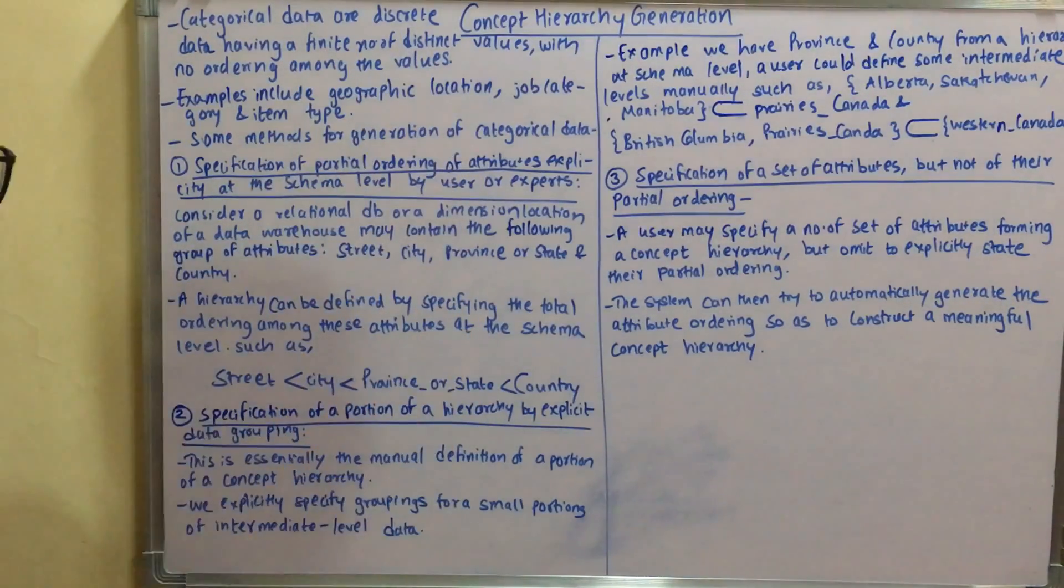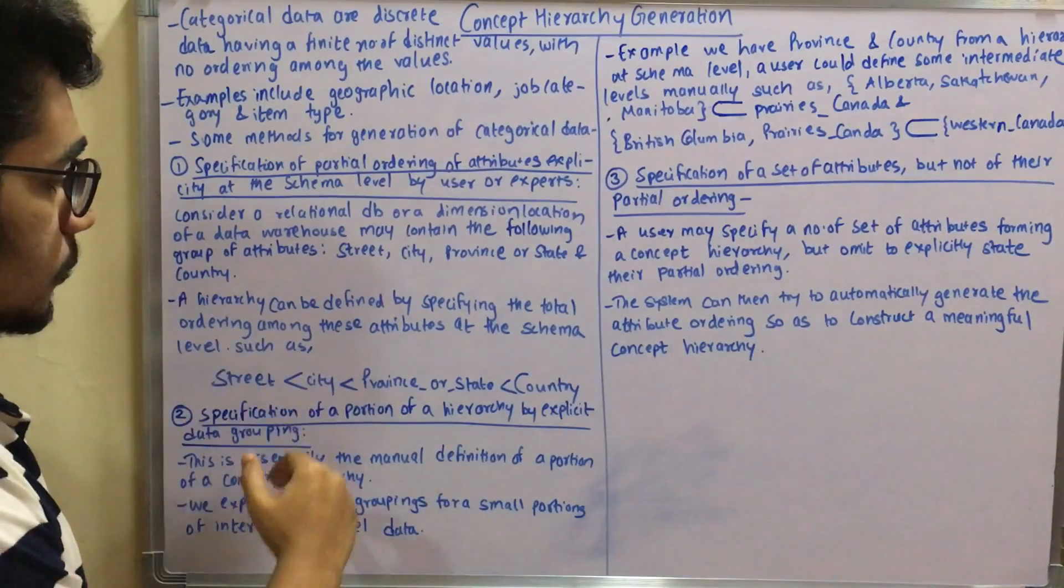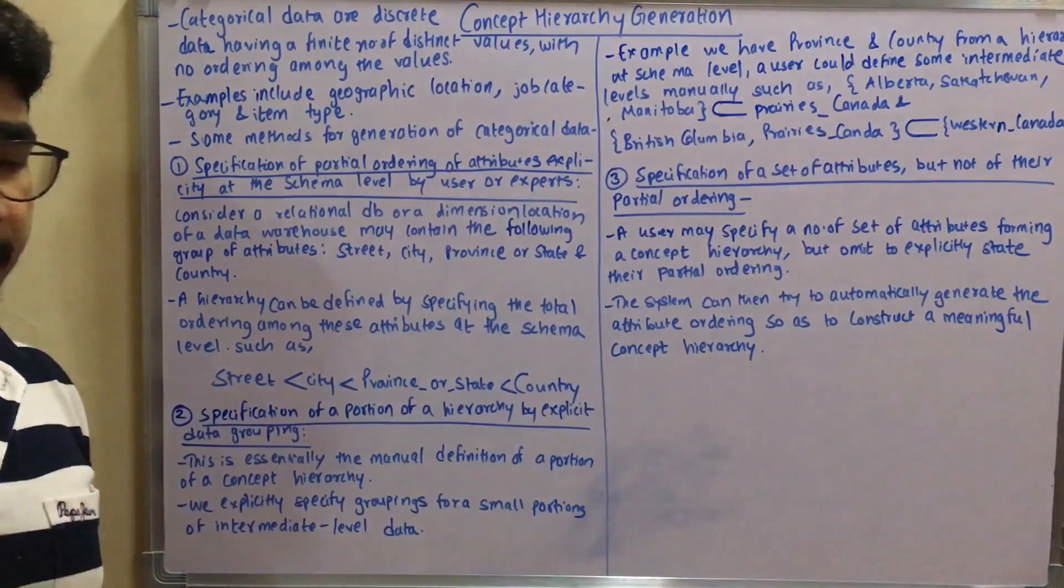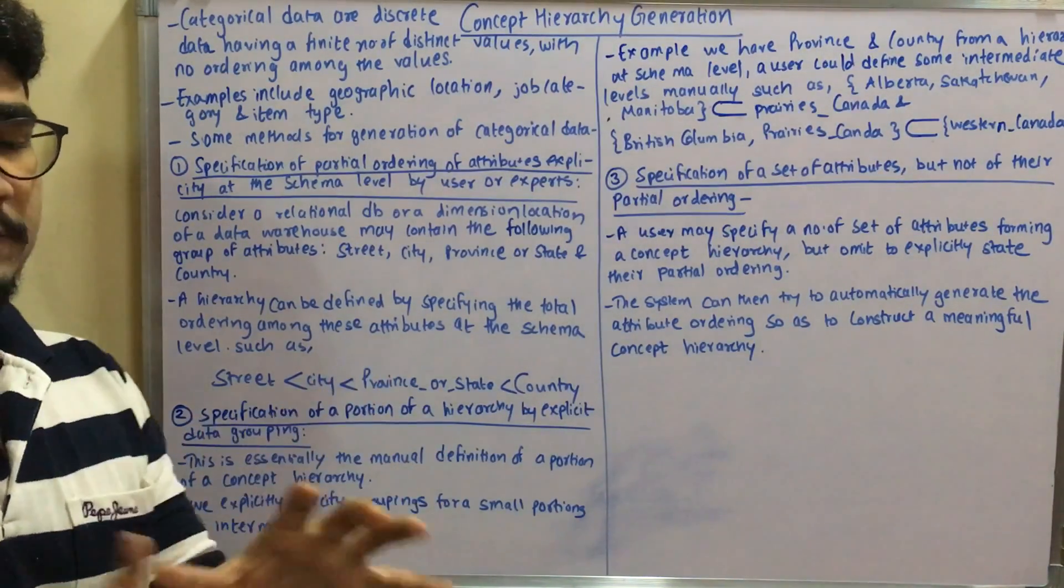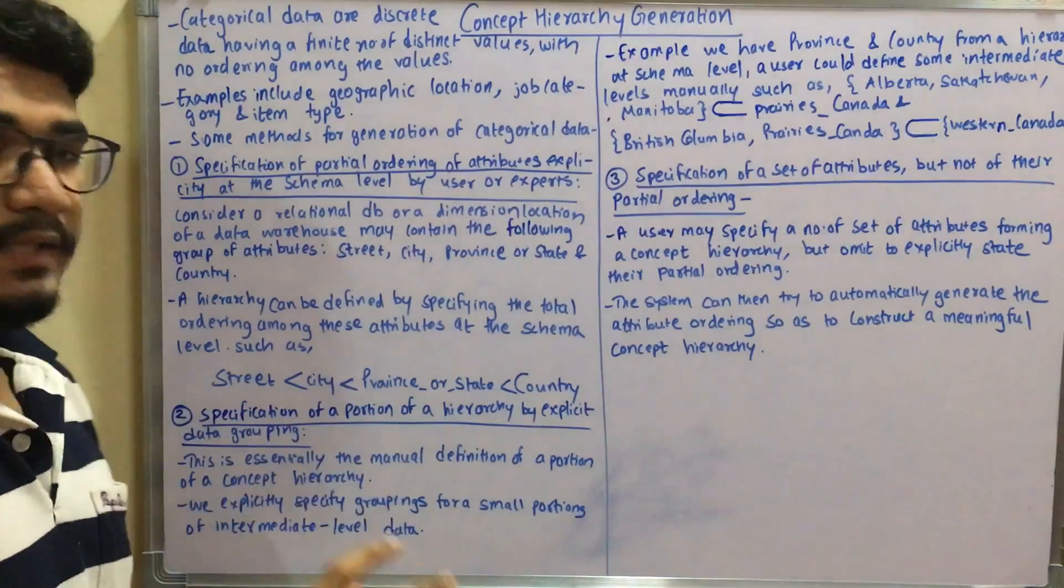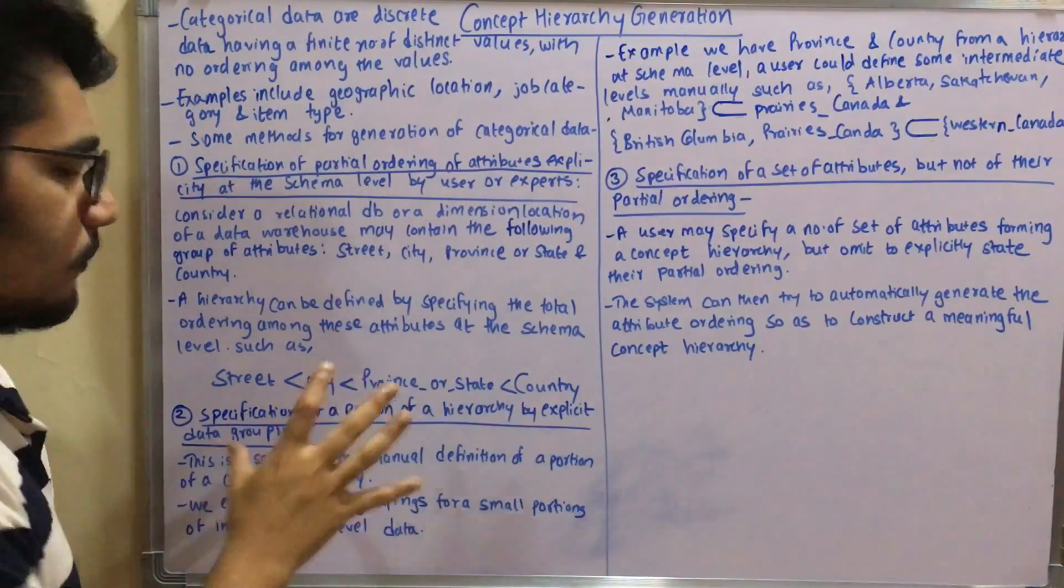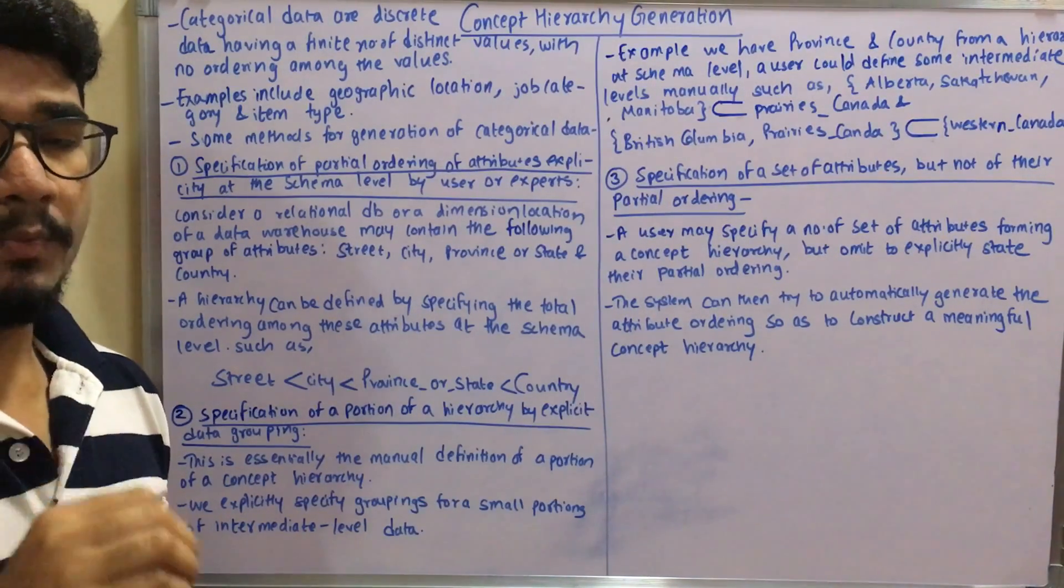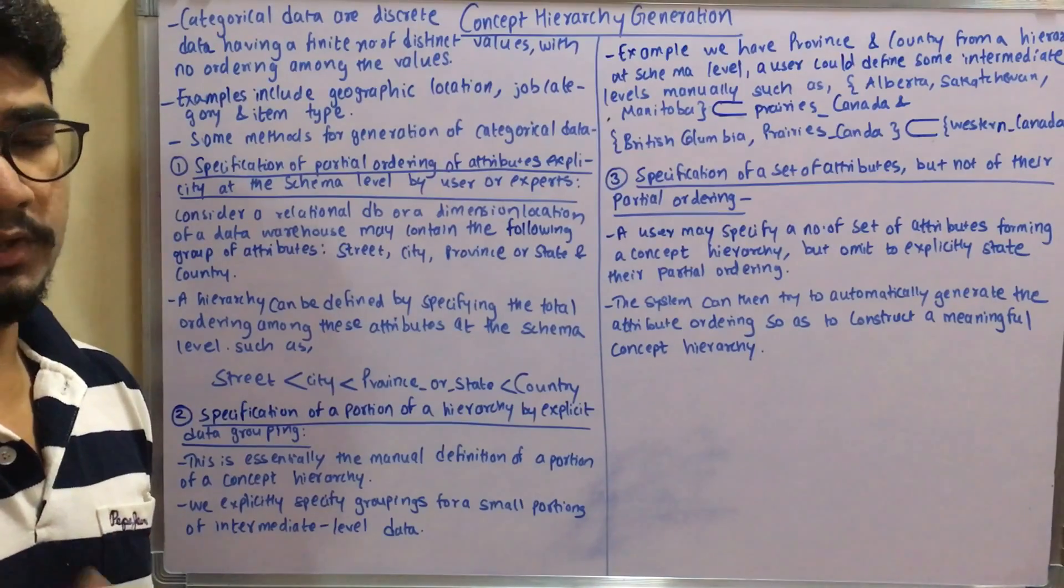Next you have specification of a portion of a hierarchy by explicitly grouping the data. Here you explicitly group the data into different categories. This is essentially the manual definition of a portion of concept hierarchy.